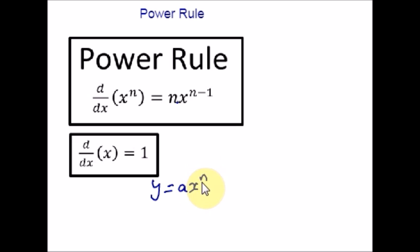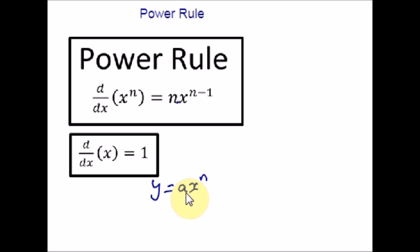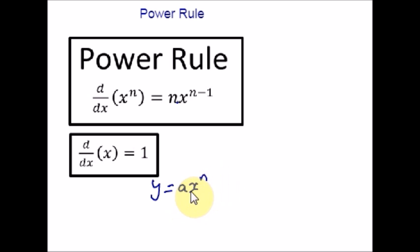It depends upon the value of n. If n is equal to 0, the equation will just become a constant. If n is equal to 1, it will become a straight line. If n is a positive whole number greater than 1, you will get a quadratic equation, a cubic equation and so on. If n is a negative whole number, you will get a reciprocal because a negative exponent shifts to the denominator to make it a positive integer. If n is a fraction, you will get an equation with a square root — for example, x raised to 1 over 2 is nothing but the square root of x.